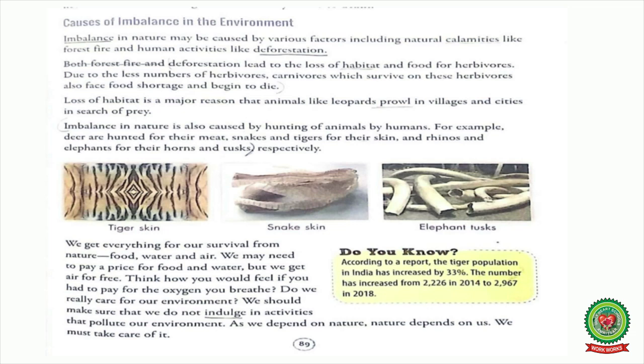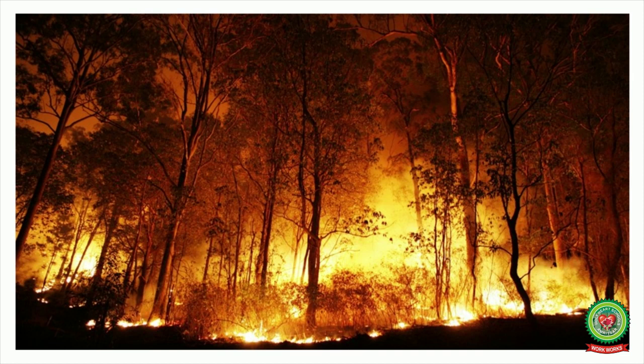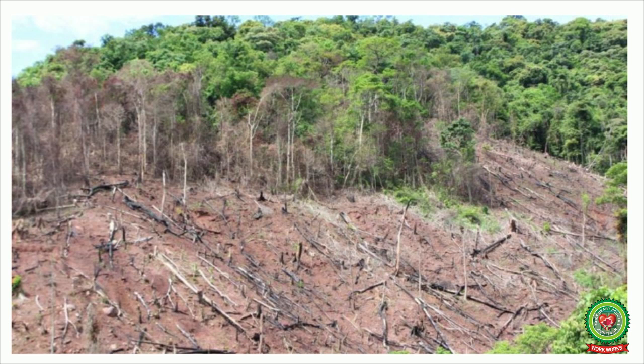Underline the word 'habitat' and write its meaning: the natural home of an animal. For example, due to forest fire and deforestation, many animals lose their natural home and face shortage of food and ultimately die. Loss of habitat is the major reason that animals like leopards prowl in villages and cities in search of prey.